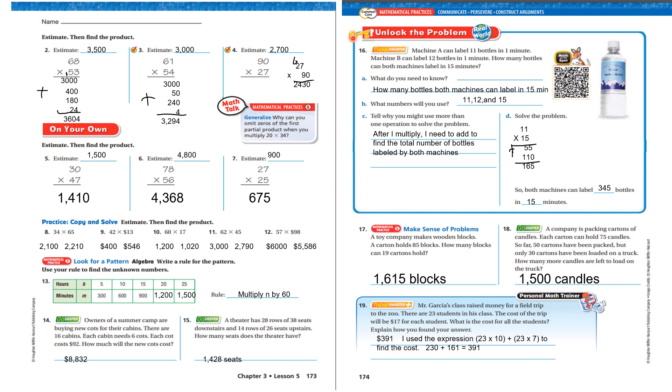Let's look at 16. Machine A can label 11 bottles in one minute. Machine B can label 12 bottles in one minute. How many bottles can both machines label in 15 minutes? What do you need to know? I need to know how many bottles both machines can label in 15 minutes. What numbers will you use? I'll use 11, 12, and 15. Why you might use more than one operation to solve the problem? Well, after I multiply, I need to add to find the total number of bottles labeled by both machines. So, it would be 11 times 15, 165, 12 times 15, 180. So both machines can label 345 bottles in 15 minutes.